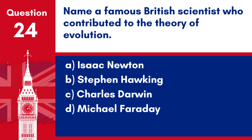Answer: b. 1642–1651. The English Civil War was a series of armed conflicts and political machinations between Parliamentarians (Roundheads) and Royalists (Cavaliers).